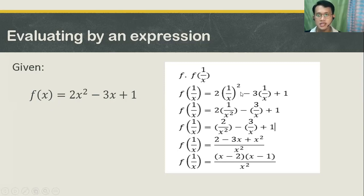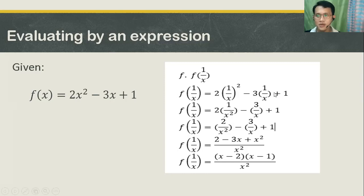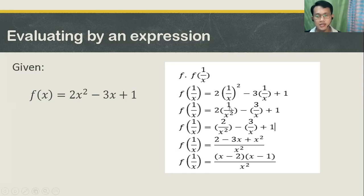As you can see, you have 1 over x, quantity squared. You need to do that first — square the numerator and then square the denominator. 1 squared, you get 1. x squared, that is x squared. So 2 times 1 over x squared, minus, when you multiply, that's basically 3 times 1 over x, so you turn that into 3 over x. Plus 1. Next, f of 1 over x: 2 times 1, you get 2. It will turn out into 2 over x squared minus 3 over x plus 1.